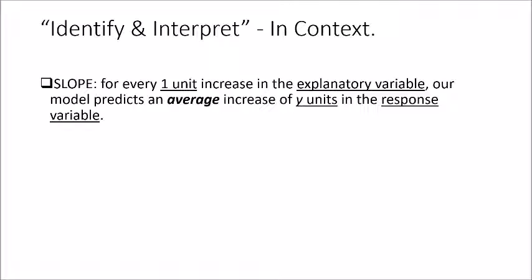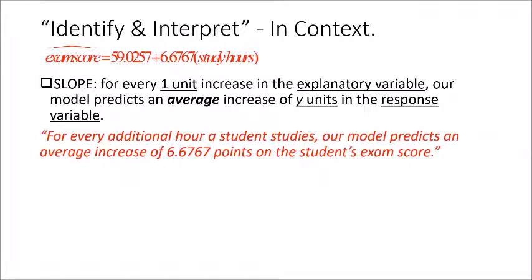So slope, remember slope on the words to memorize. It says for every one unit increase in the explanatory variable, our model predicts, key word predict, an average, important word, average, increase of y units in the response variable. So in context of this problem, for every additional hour a student studies, our model predicts an average increase of, fill in the slope value, 6.6767 points on the student's exam score.